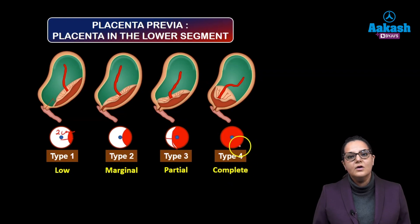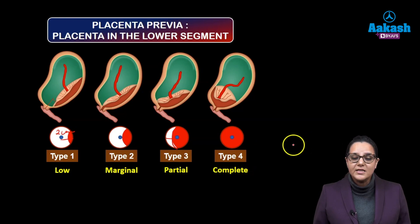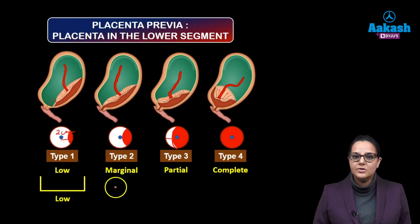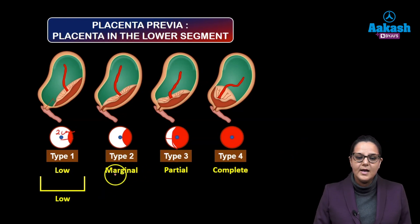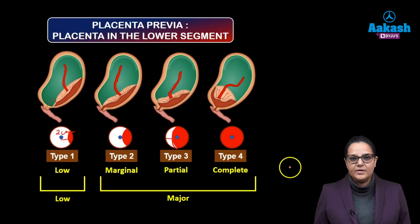And type 4, where it is completely covering the internal os. Now, as per the newer classification, low remains to be low-lying, and all of marginal, partial, and complete have been grouped under major placenta previa.